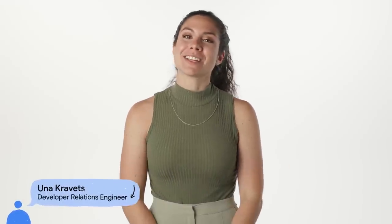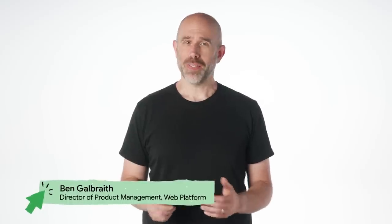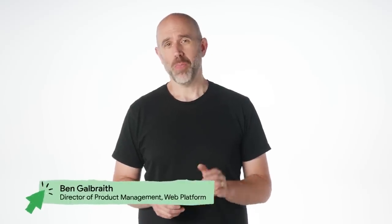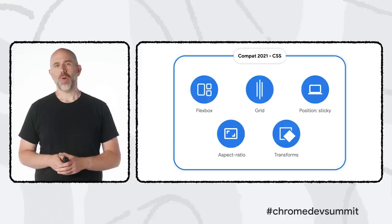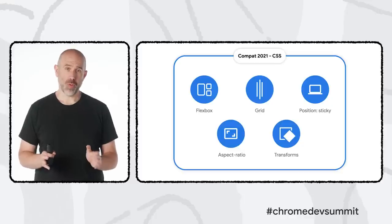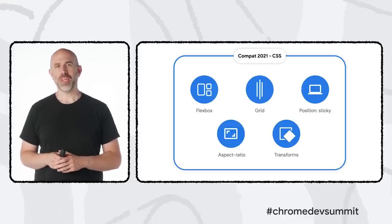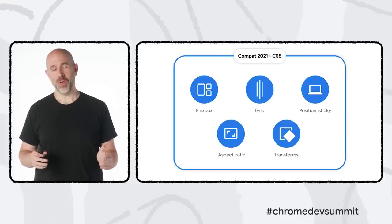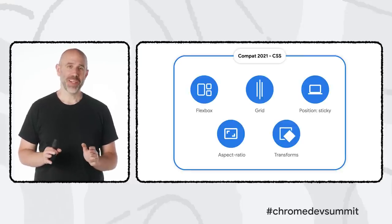In 2020, the Chromium project started the Compat effort and has been working on making the web platform more interoperable. One of the most important themes, coming from feedback consistently received from web developers via surveys and individual conversations, is the importance of cross-browser compatibility. This year, a new cross-browser effort called Compat 2021 was added, focused on improving compatibility in five key areas of the web — all related, shockingly, to CSS.